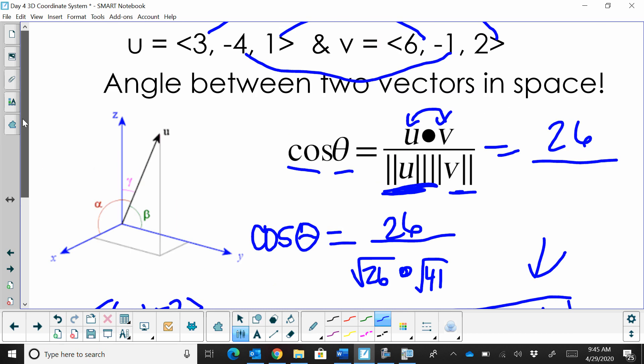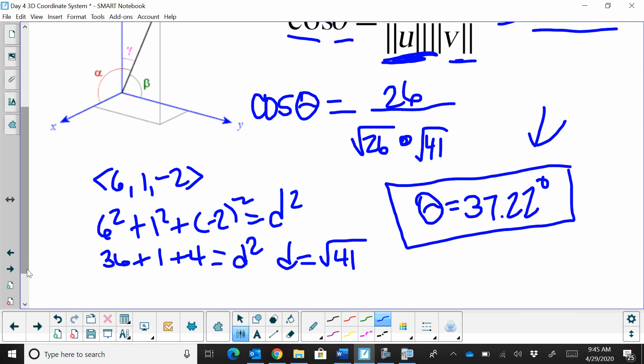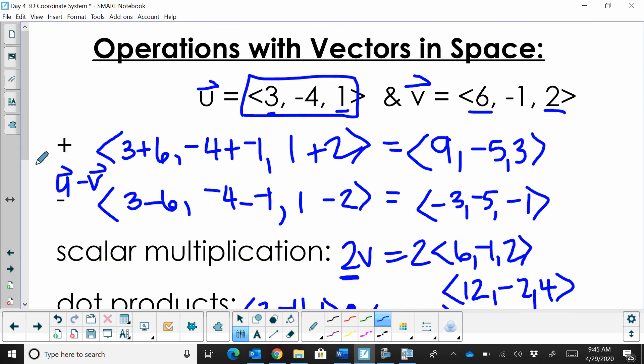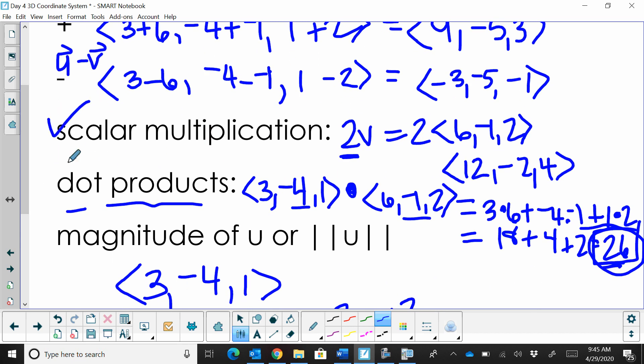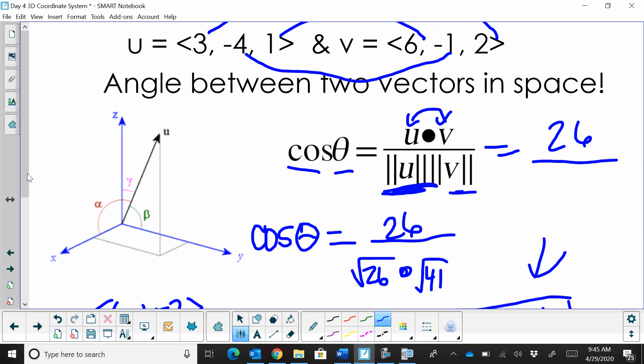That's all there is on this lesson, is finding the, using operations, which is add, subtract, scalar multiplication, dot products, finding magnitude in three dimensions, and then applying that also to the formula to find the angle between two vectors in three dimensions. Hope this video was helpful.